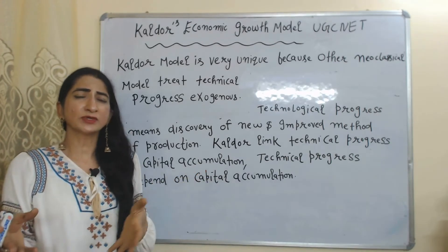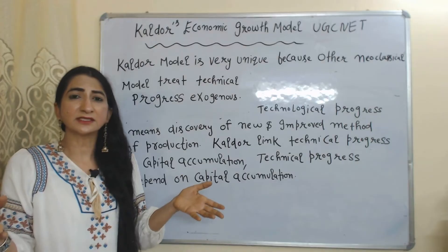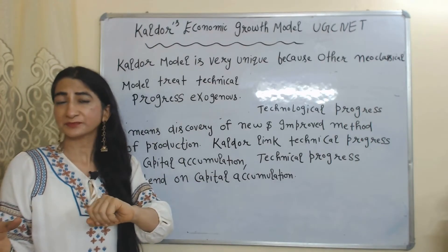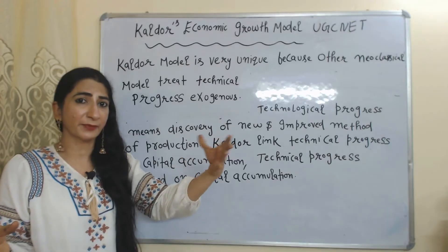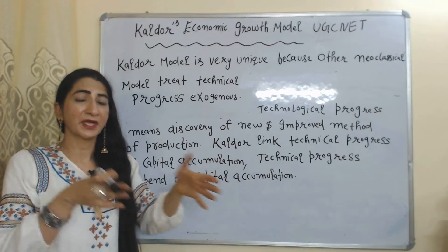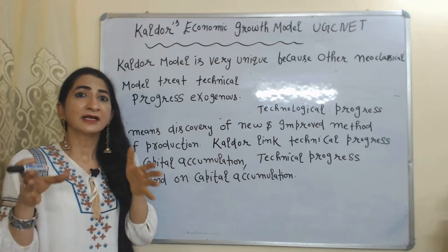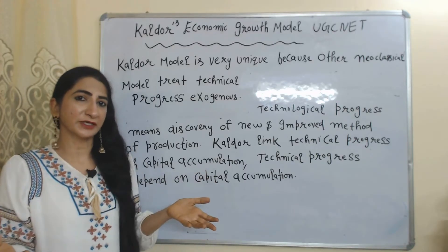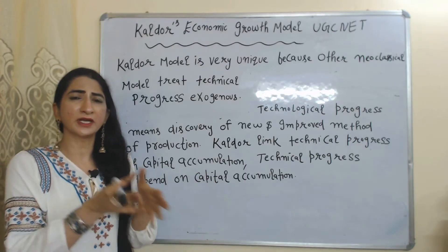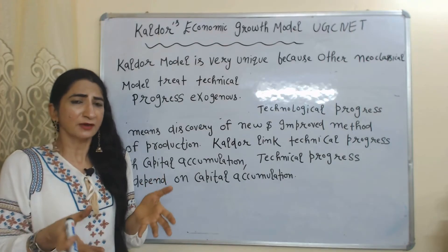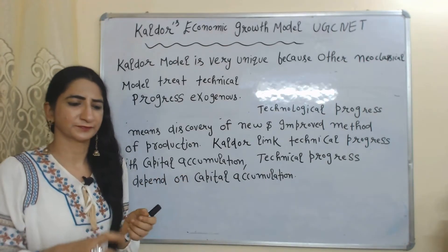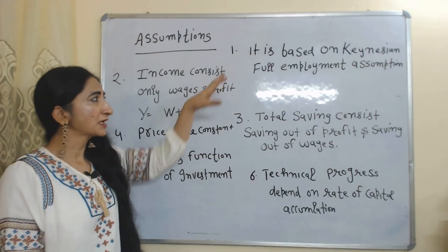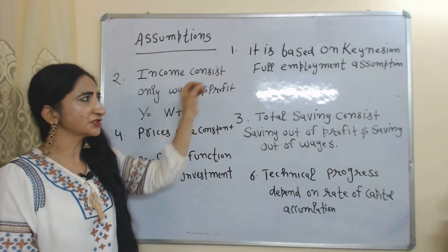Technical progress means the discovery of new and improved methods of production. Kaldor links technical progress with capital accumulation. According to Kaldor, technical progress depends on capital accumulation — obviously, as we accumulate more and more capital, we will technically improve. Now we'll see the assumptions of this model.